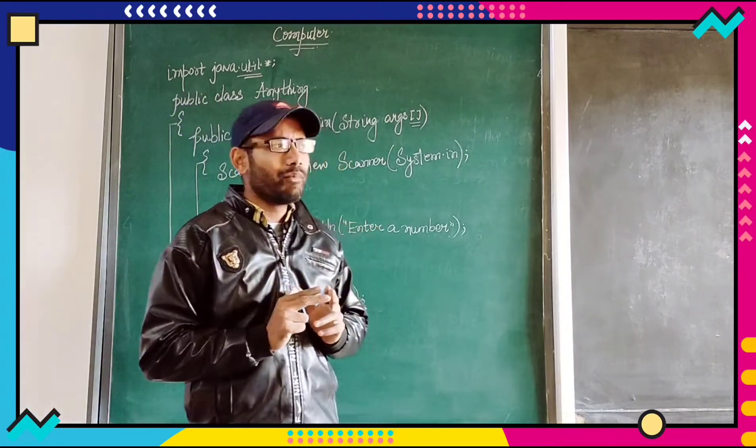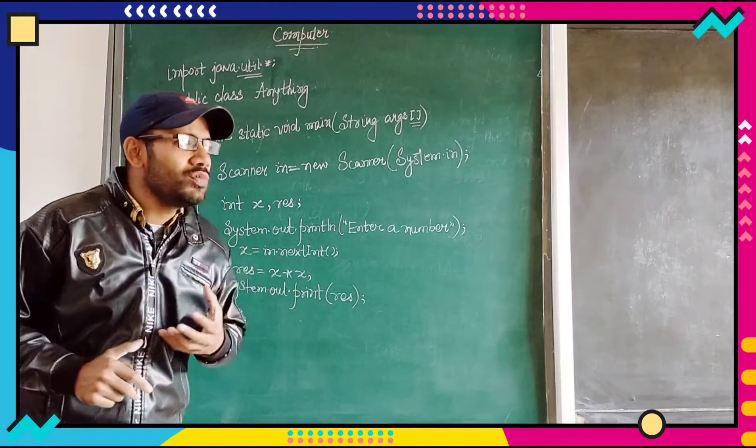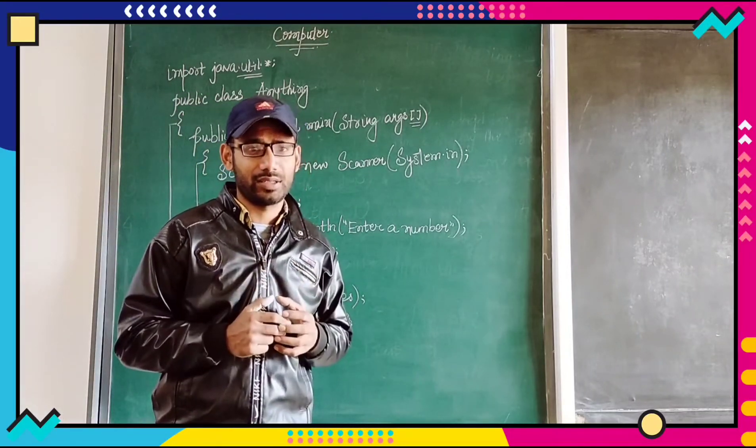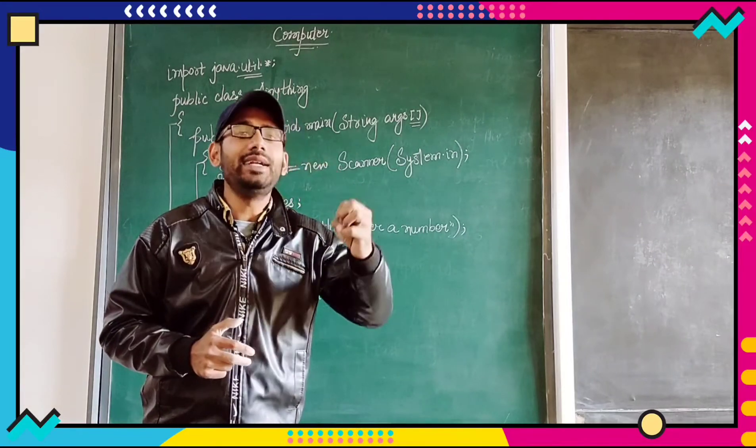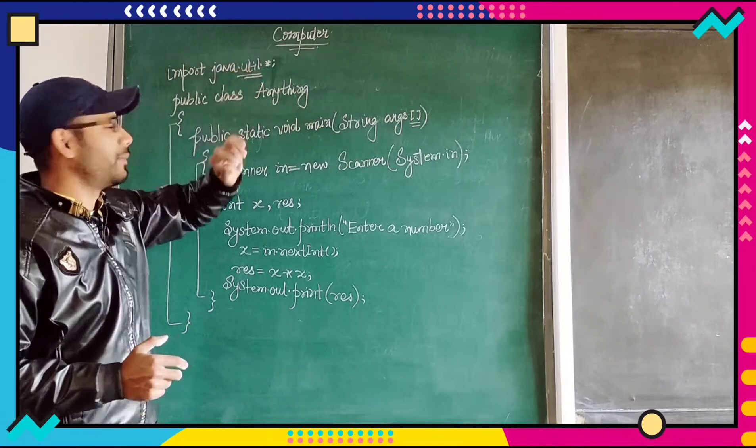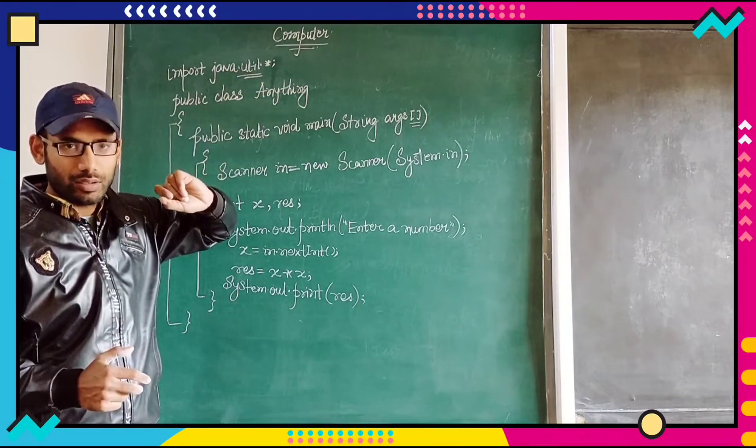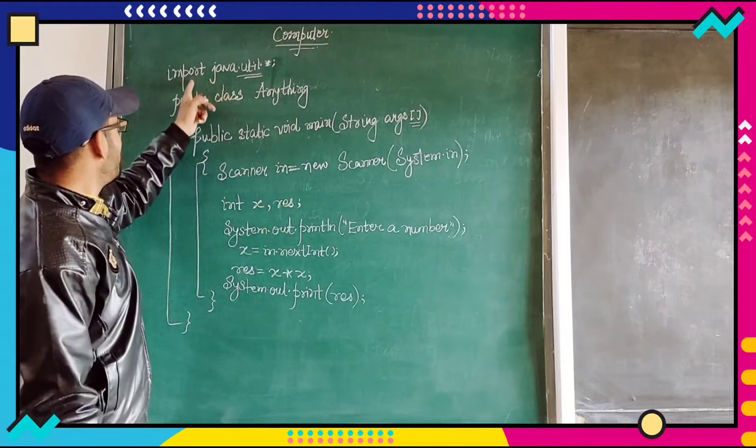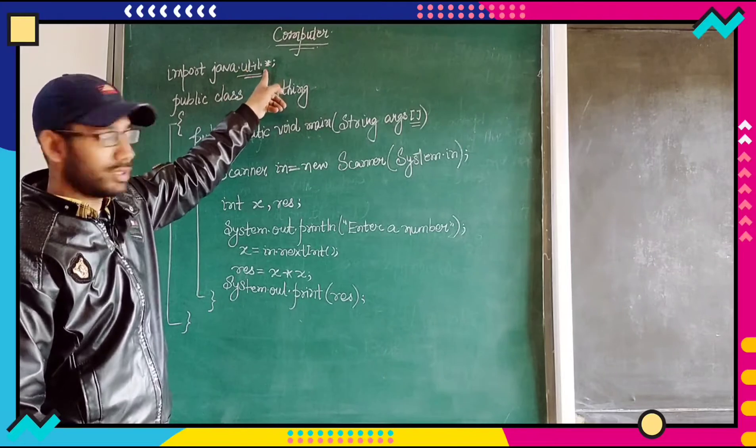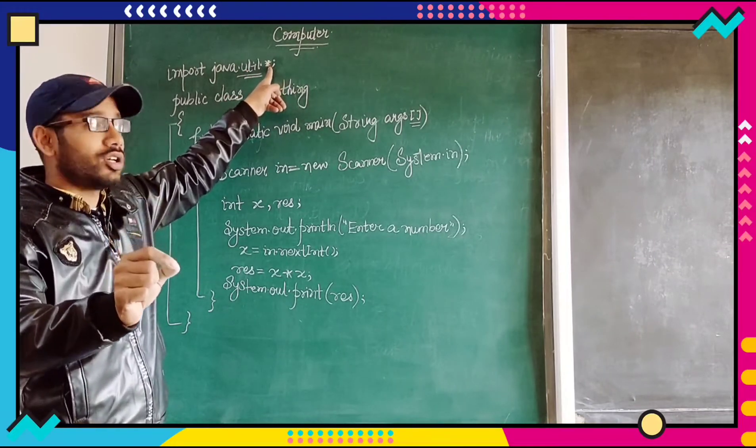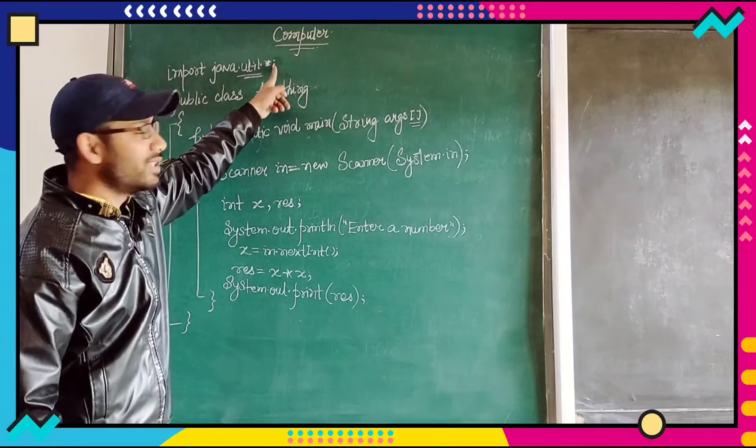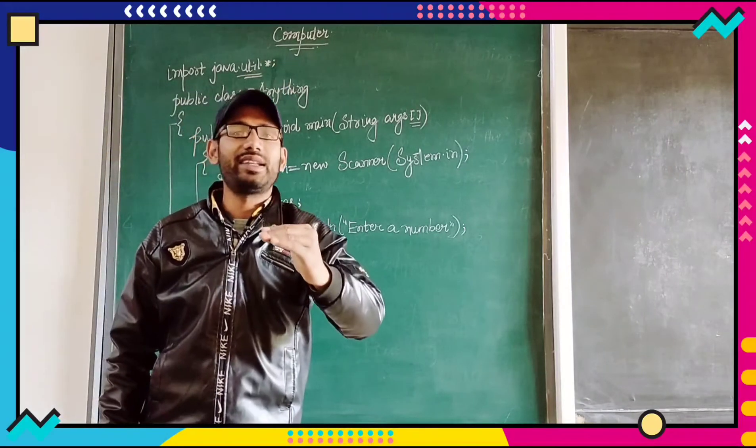Similarly, there are many functions, many methods which comes in with a package. Over here what we have used is import java dot util dot, this star mark in computer terminology is known as asterisk, after that semicolon or you may say terminatory semicolon.